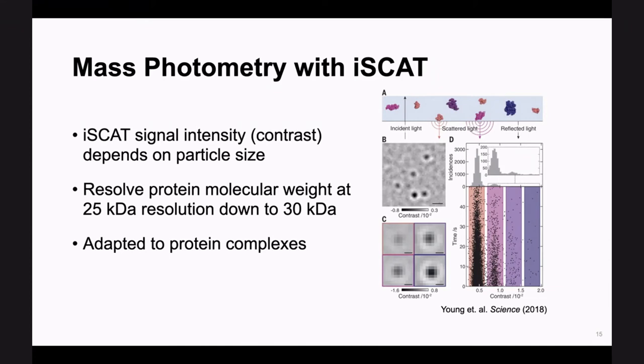The interference term scales as the radius of the particle to the power of one instead of two, which makes it much more interesting for improving the signal of small scatterers — you win a lot with iSCAT for looking at very small particles. That's why with iSCAT you can visualize single proteins. Philip's lab has really developed iSCAT to not only visualize but to measure the mass of proteins — there's even a commercial product for this, for determining molecular weight of protein complexes with quite high resolution.